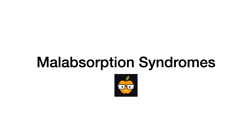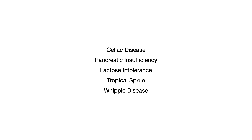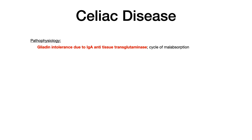In this video, I will break down the five high-yield malabsorption syndromes and explain everything that you need to know for COMLEX and USMLE — and not anything further. Here are the five disease processes: celiac disease, pancreatic insufficiency, lactose intolerance, tropical sprue, and Whipple disease. Let's get started with celiac, which tends to be the most important and most often covered.